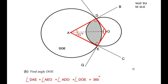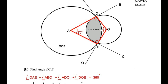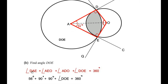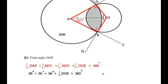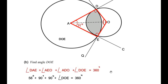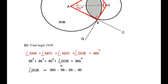So we write: angle DAE + angle AEO + angle ADO + angle DOE = 360°. Substituting values: 56° + 90° + 90° + angle DOE = 360°. Solving, angle DOE = 360° − 56° − 90° − 90°, which gives a value of 124 degrees. So angle DOE is 124 degrees.